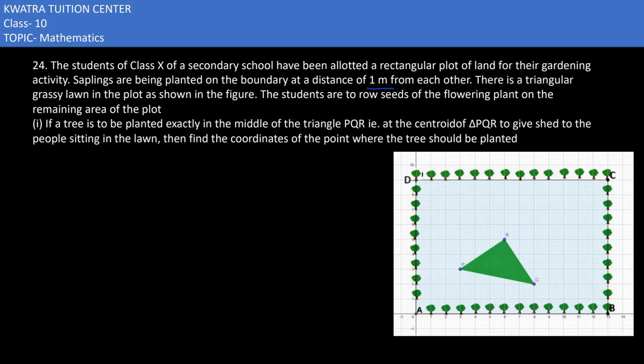If a tree is to be planted exactly in the middle of the triangle PQR, at the centroid, to give shade to the people sitting in the lot, then find the coordinates of the point where the tree should be planted. So basically if you want to find the centroid, what do you do?